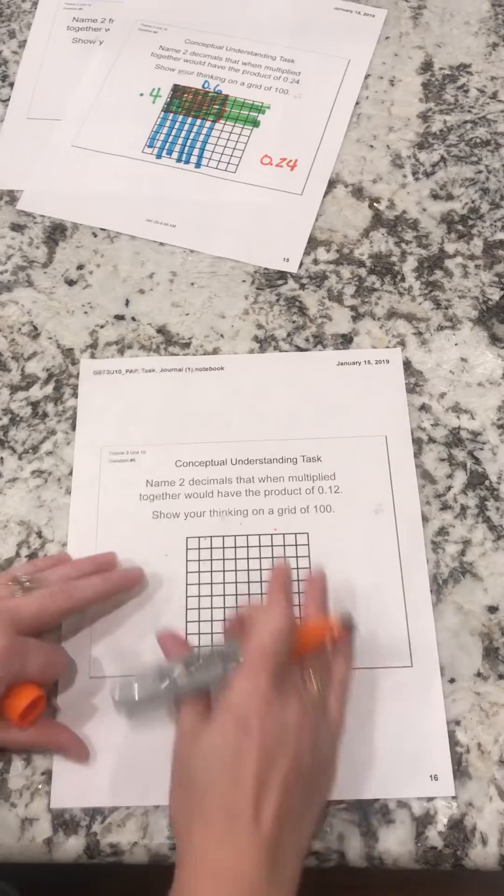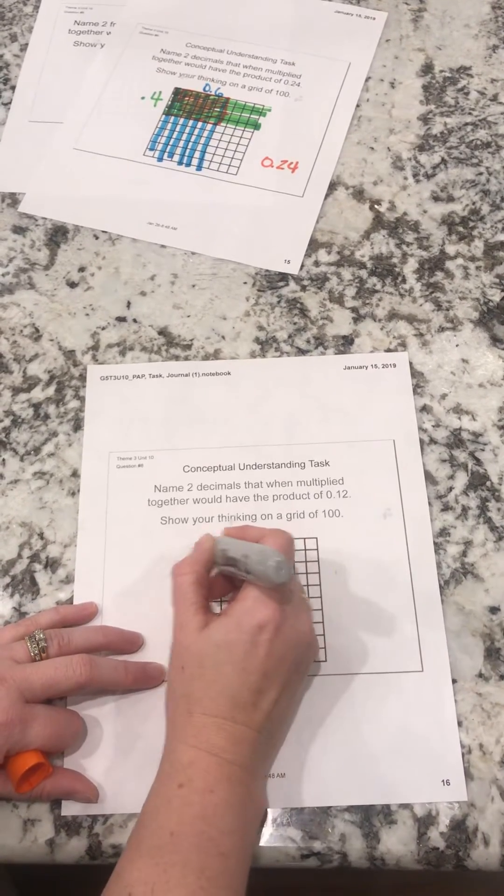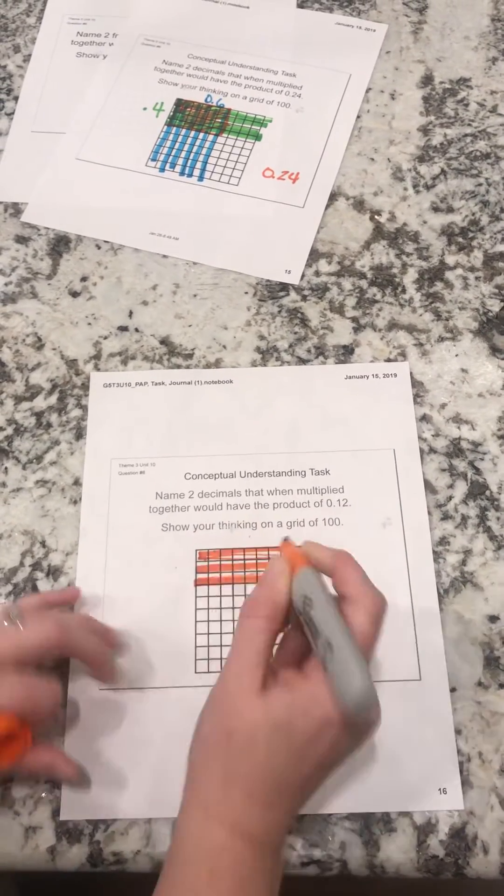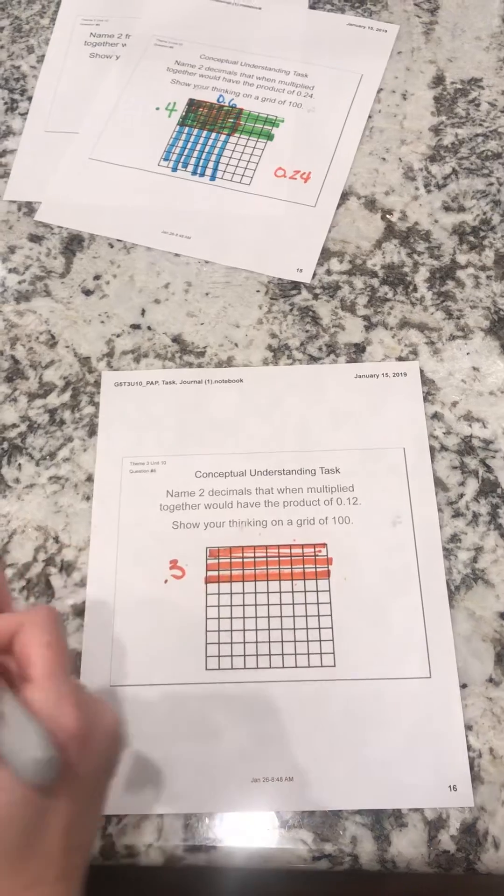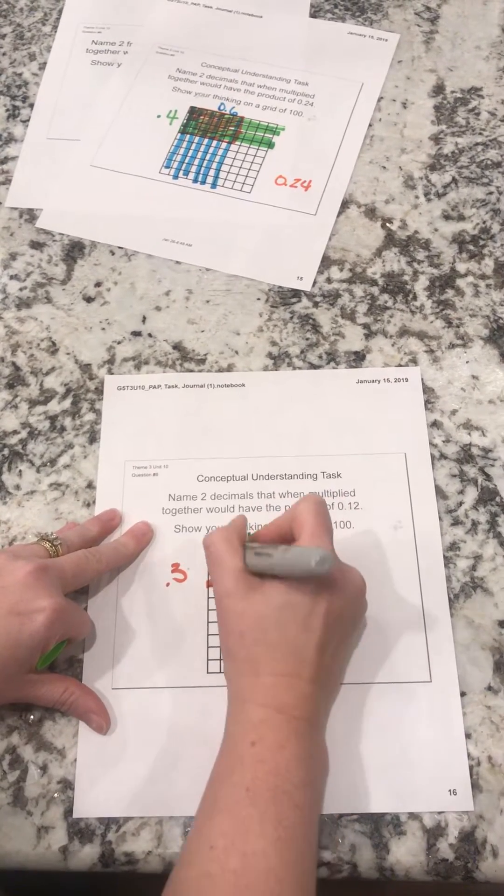Same with this, I have twelve hundredths. Not the only correct answer, but I'm going to show you an example of how we can solve this. So I have three tenths times four tenths.